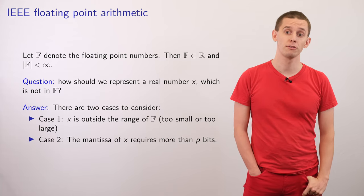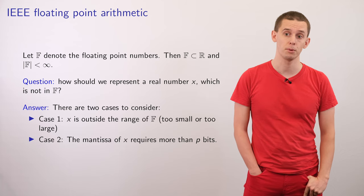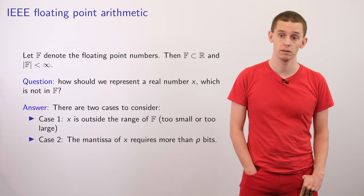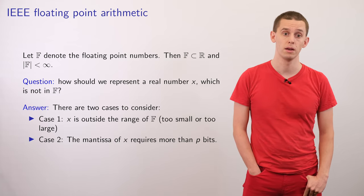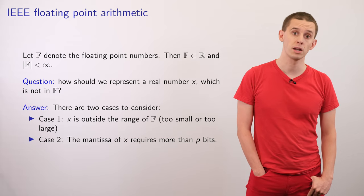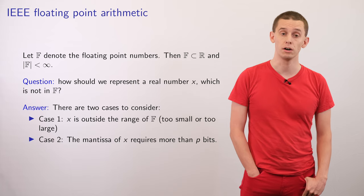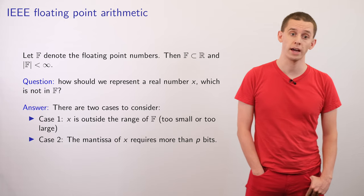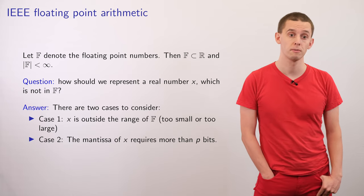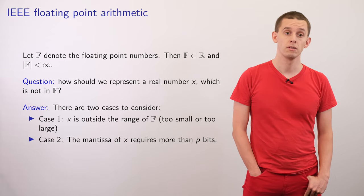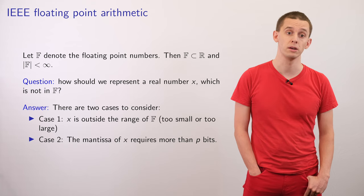Now let's talk about the IEEE floating point arithmetic standard from a more mathematical standpoint. Let F denote the set of floating point numbers that we can represent in our number system. F will be contained within the real numbers, but F will itself be a finite set. There's a question of how we would represent a real number X that lies outside of F. There are two cases to consider: X could be outside the range of F — either too small or too large — or the mantissa of X might require more bits than we can use.